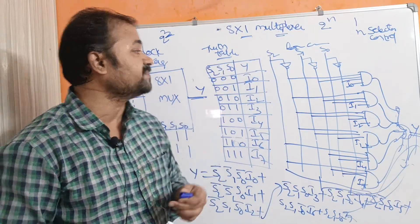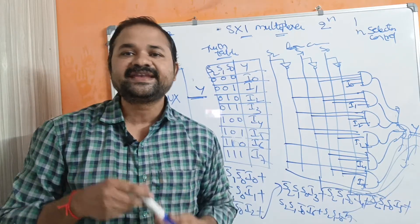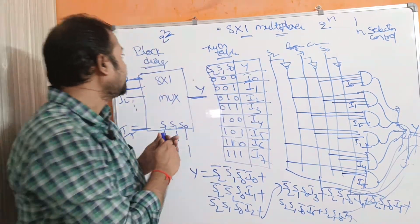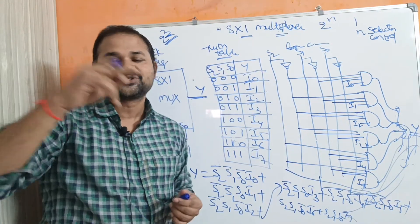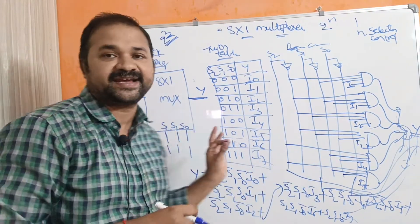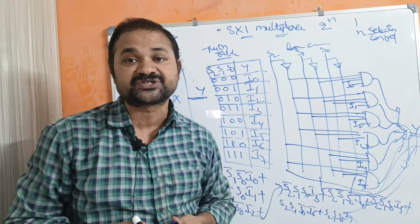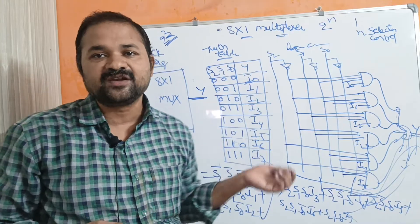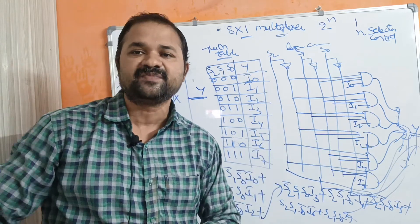So this is the 8 by 1 multiplexer. An 8 by 1 multiplexer accepts 8 data input lines and produces only one output. Since 8 equals 2 power 3, it has 3 selection inputs: S0, S1, and S2. Out of all 8 data inputs, which input will be active and displayed as output is decided based upon the selection or control inputs S0, S1, and S2.